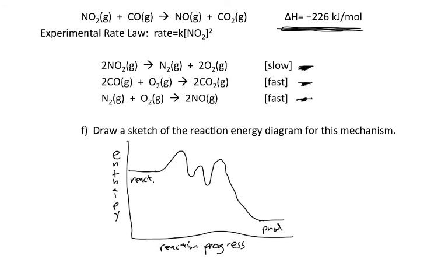The key points for the reaction energy diagram: it's a three-step mechanism so there should be three activation energies; it's exothermic so reactants should be higher in energy than products; and because the first step is rate determining, it should have the highest activation energy of the three steps.